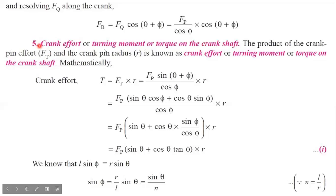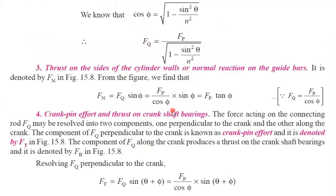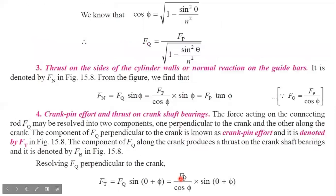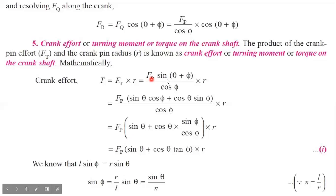The fifth force is the crank effort, or turning moment, or torque on the crankshaft T. It is the product of crank pin effort Ft and the crank pin radius R. So T = Ft × R. Substituting Ft = Fp × sin(θ + φ) / cos φ, we get T = Fp × sin(θ + φ) × R / cos φ. Now sin(θ + φ) can be expanded as sin θ cos φ + cos θ sin φ, divided by cos φ.